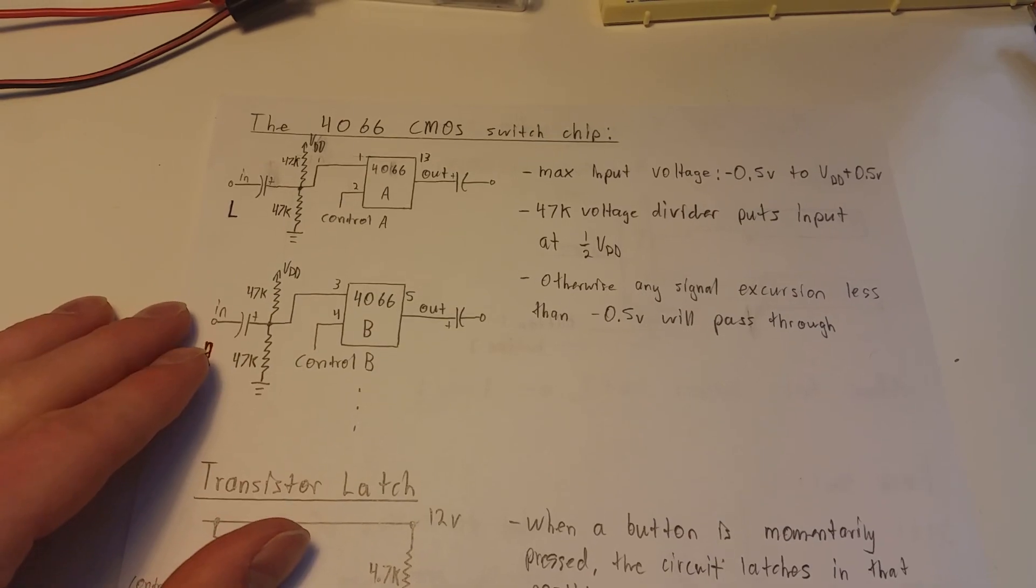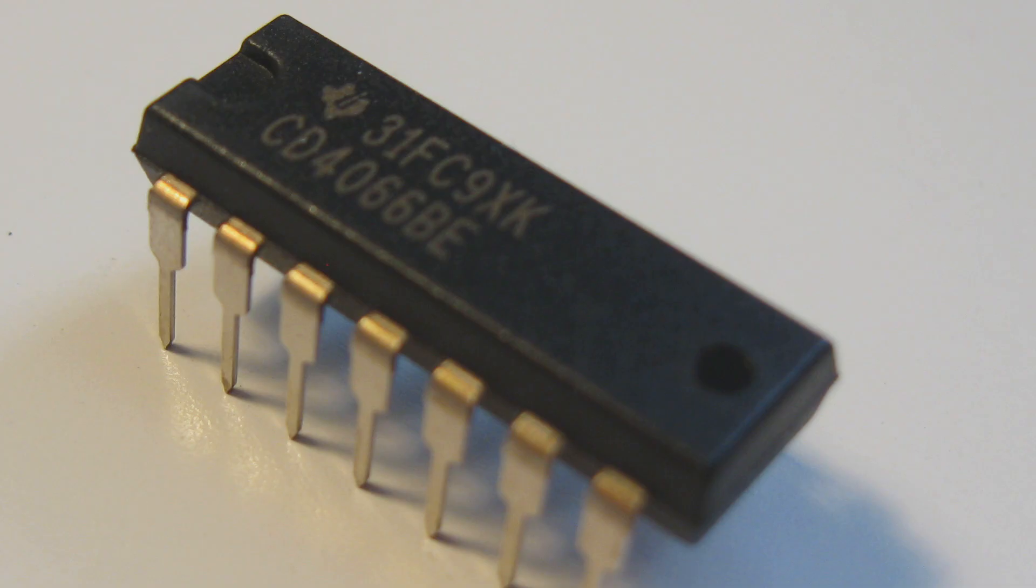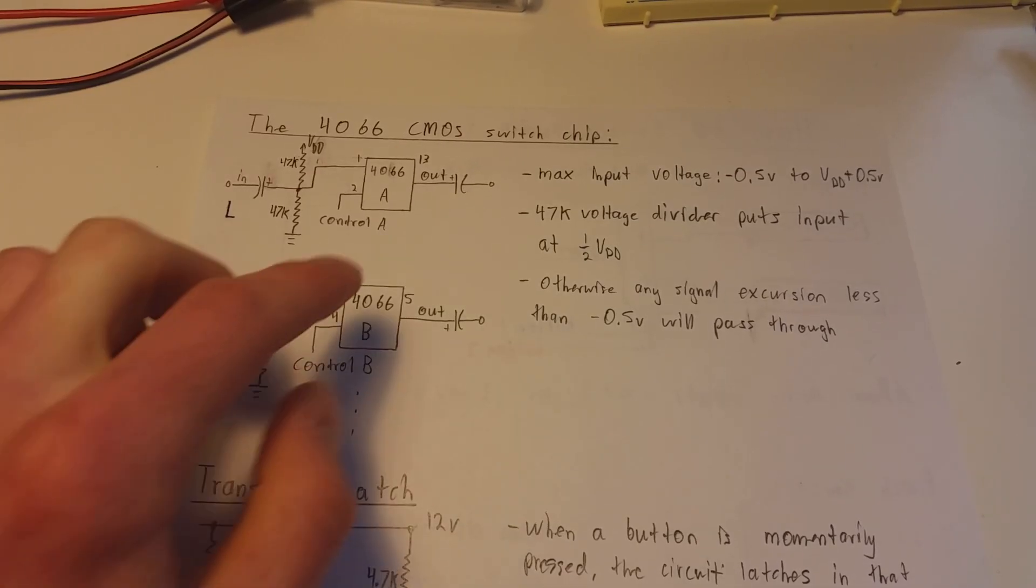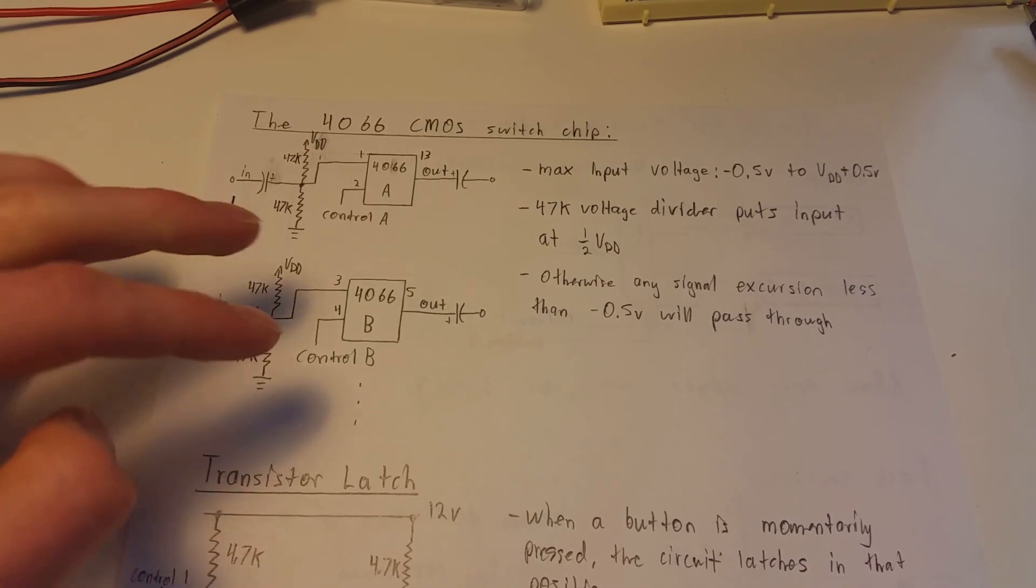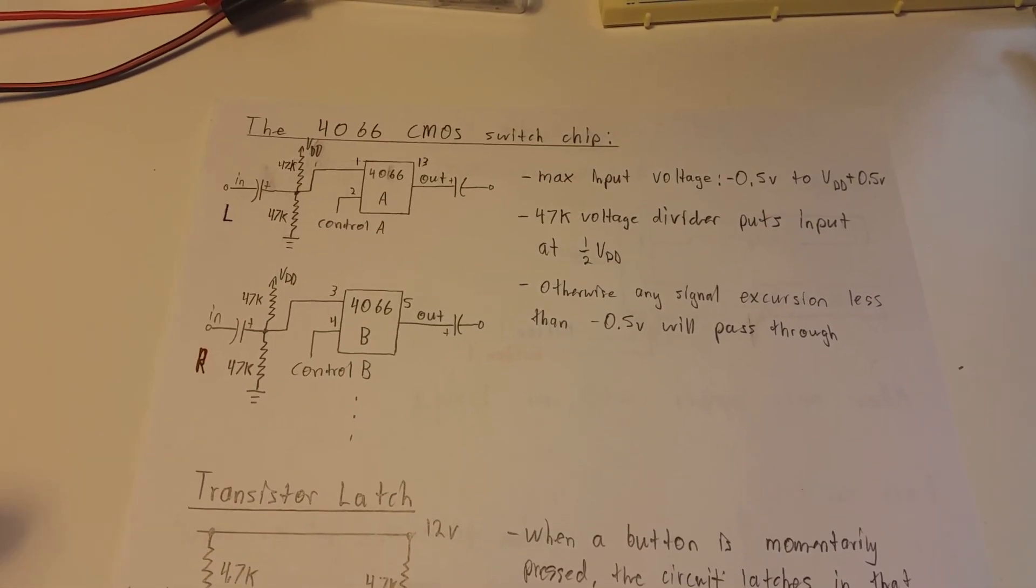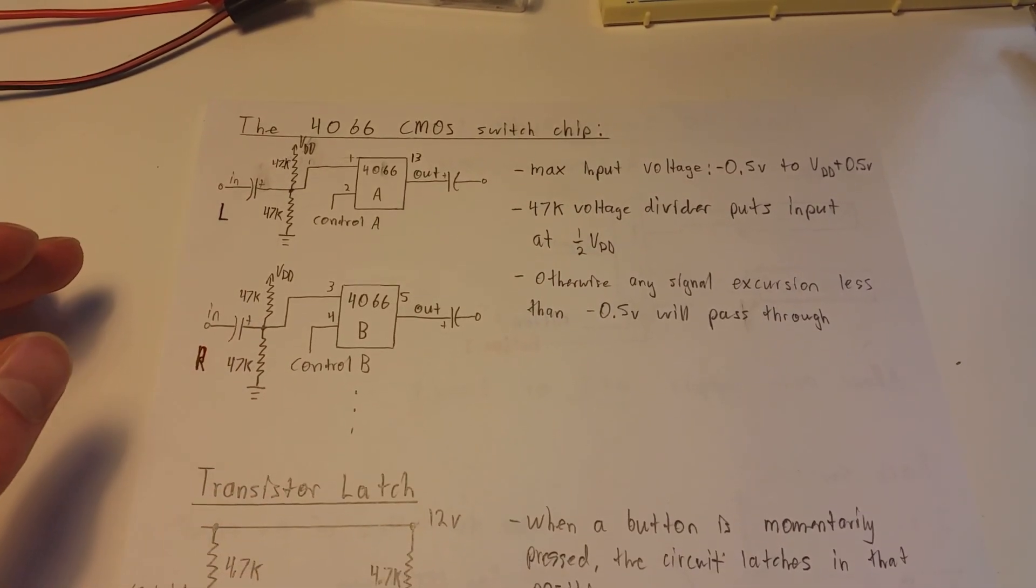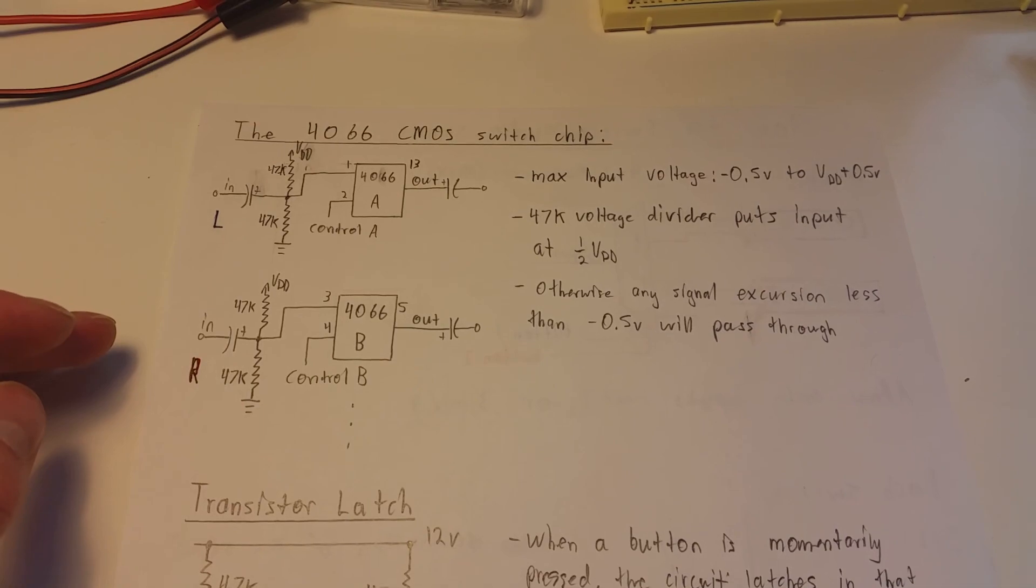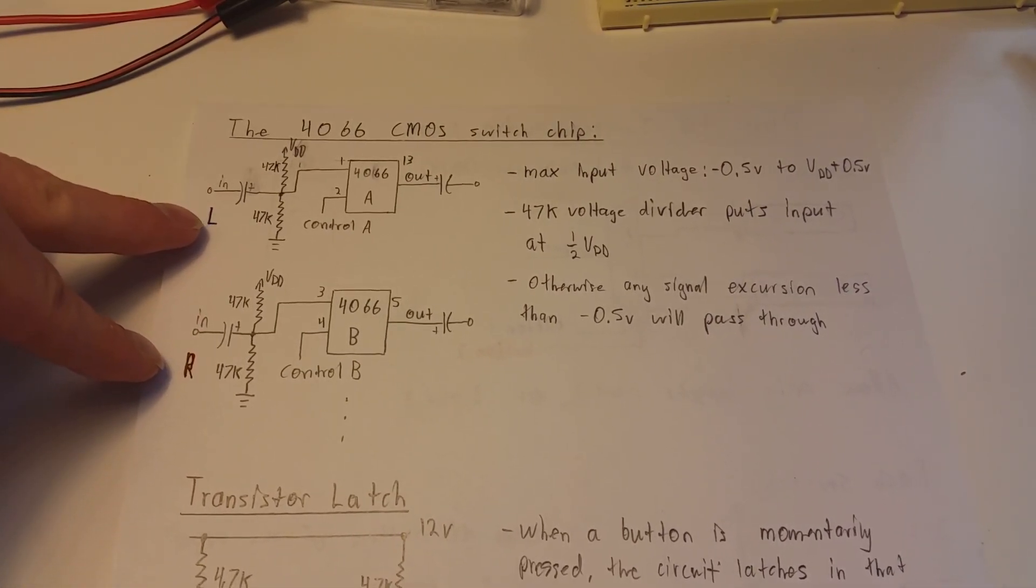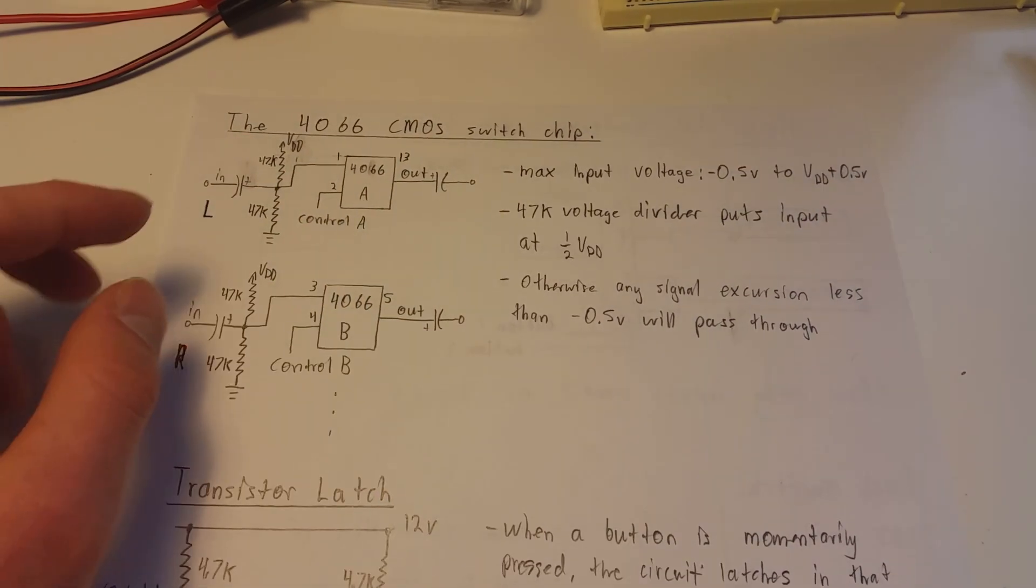One way I implemented this was with a 4066 CMOS chip. This is exactly what this is. It's basically a complementary CMOS switch, but there's four of them in the chip. I'm only showing two here, but there's four of them in the chip. So you can switch two stereo devices with this. In this example, I'll only be switching two. I have a left and a right channel coming out of a tape deck, and it's feeding this thing.